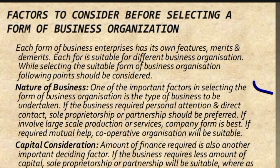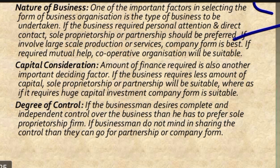If it is large-scale production and service, then you should go for the company option. And if you need mutual help — meaning you need to work together with others — then you should go for a cooperative organization. So: personal attention or direct contact → sole proprietorship or partnership; large-scale production or service → company; mutual help → cooperative organization.